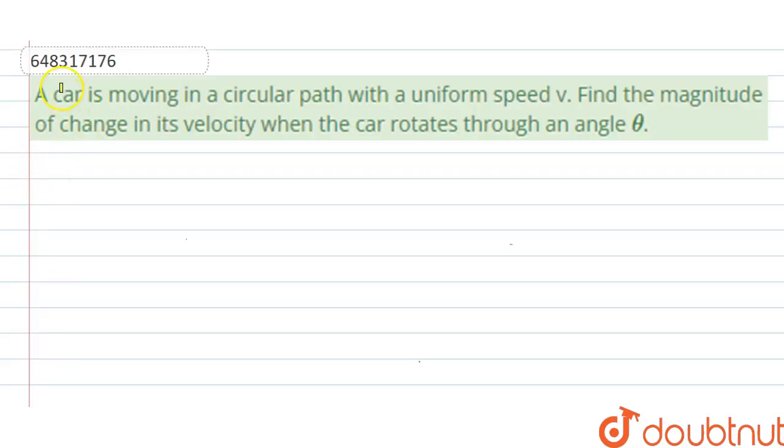Hello students, here our given question is: a car is moving in a circular path with a uniform speed v, then find the magnitude of change in its velocity when the car rotates through an angle of theta.